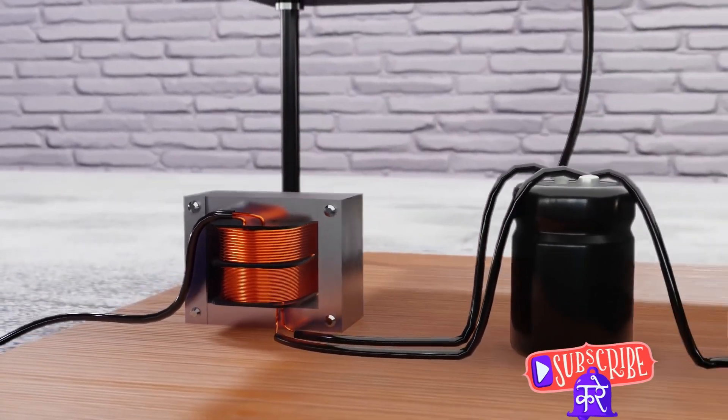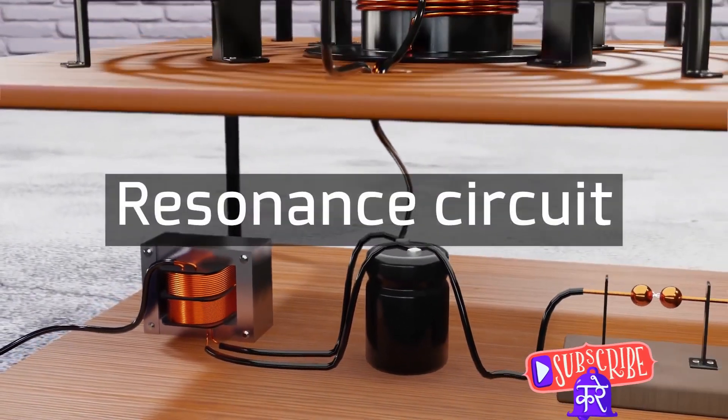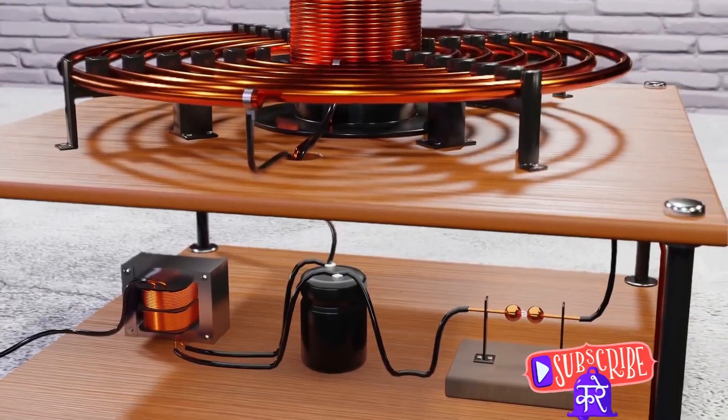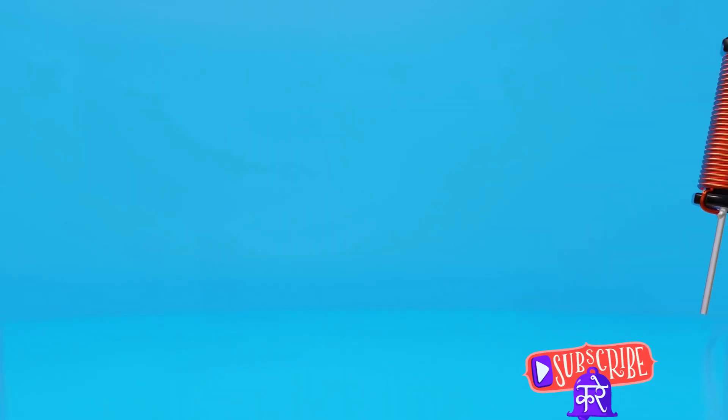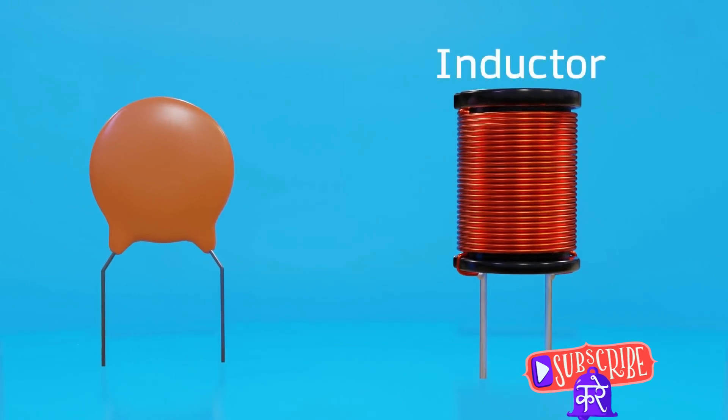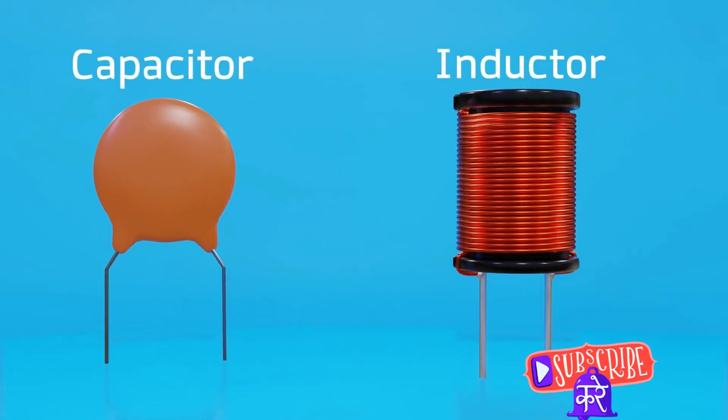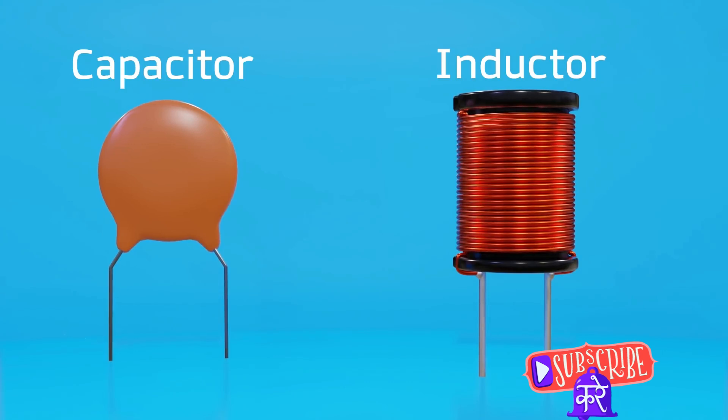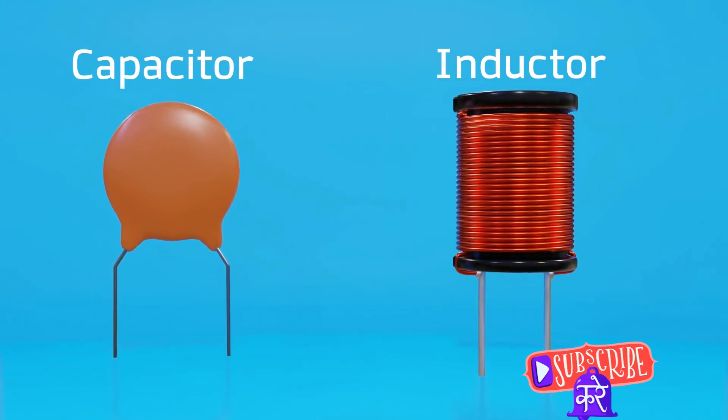So in essence, the power source gives the Tesla coil its energy, the primary coil starts the transformation process, the secondary coil steps up the voltage, and the spark gap controls the flow of current. Now that we know the basic components, let's dive into how they work together to create those impressive sparks.